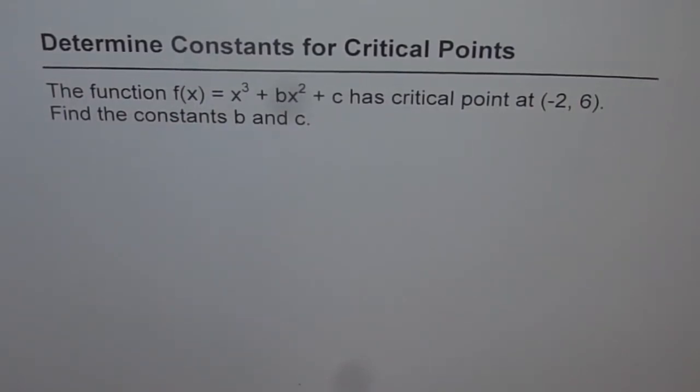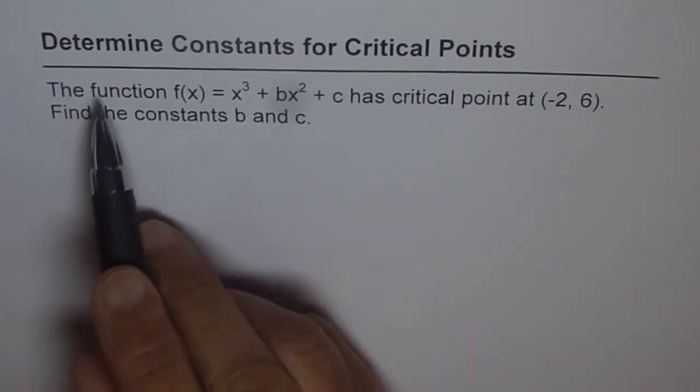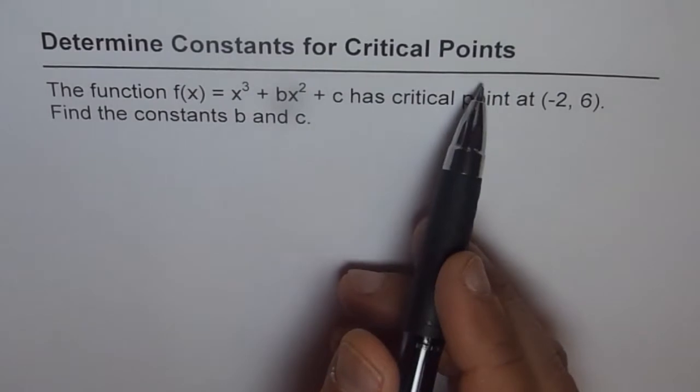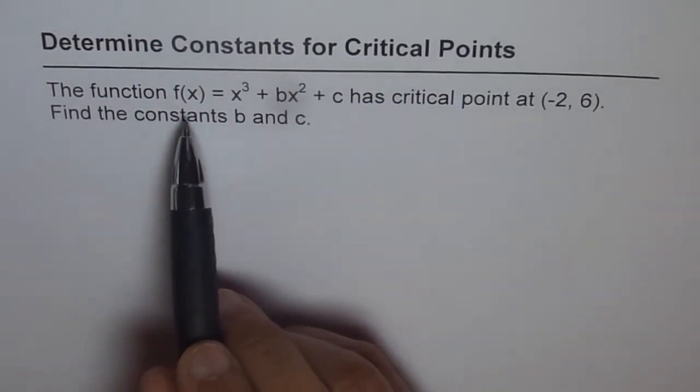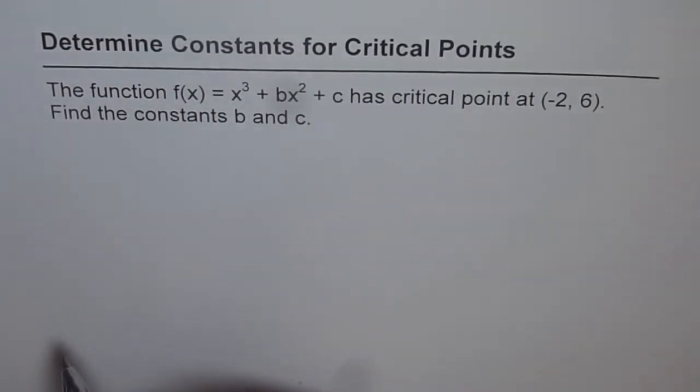Here is a thinking problem where we are given the critical point and we need to find the function itself. So determine constants for critical points. The function f(x) equals x³ + bx² + c has critical point at (-2, 6). Find the constants b and c.